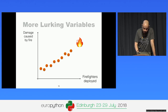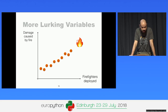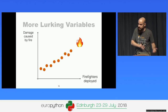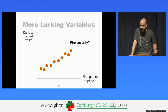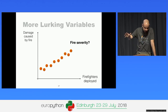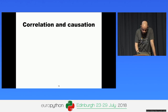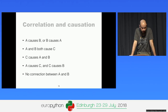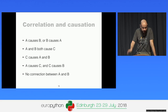One more example: whenever there is a fire accident, if you deploy more firefighters on the scene, you will also have bigger damage. From a decision-making point of view it might seem like deploying fewer firefighters means less damage — but of course, a big fire also has a higher chance of causing bigger damage. Fire severity is behind the scenes. To summarize the options: either A causes B, or B causes A, or maybe a third variable causes both, or there's a transitive relationship, or maybe there's just no connection.